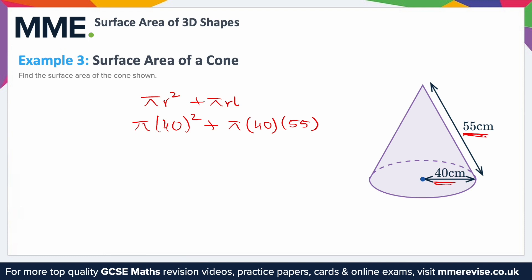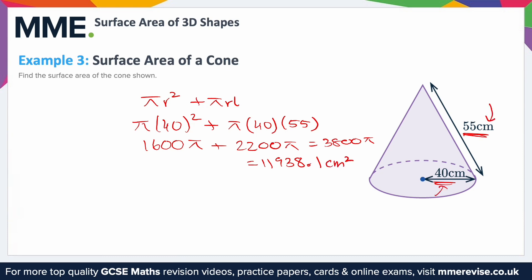We can tidy this up. 40 squared is 1,600, so we have 1,600π, plus 40 times 55 is 2,200π. In total that's 3,800π. Putting this in the calculator and giving it to a sensible number of decimal places gives 11,938.1. The measurements are in centimetres, so the final answer is 11,938.1 centimetres squared because it's an area.